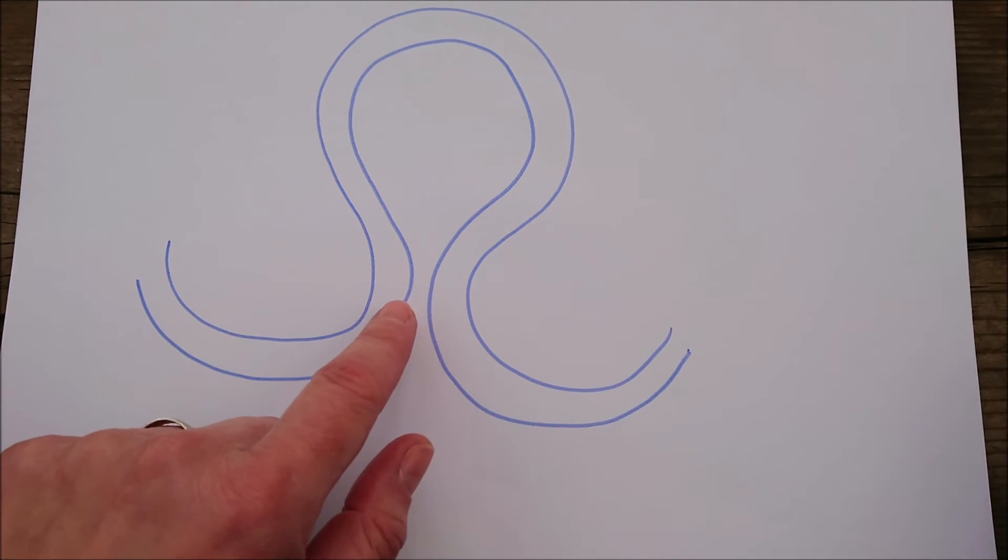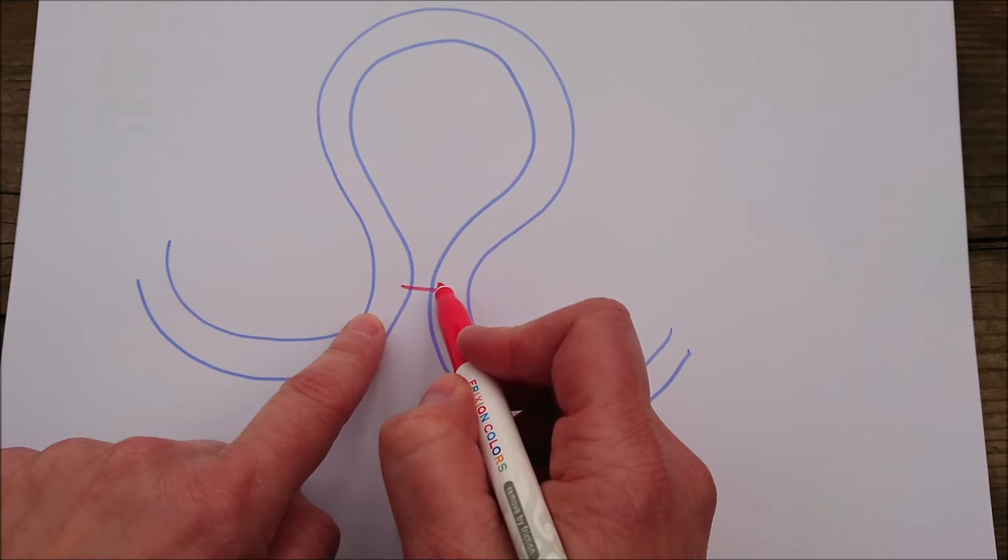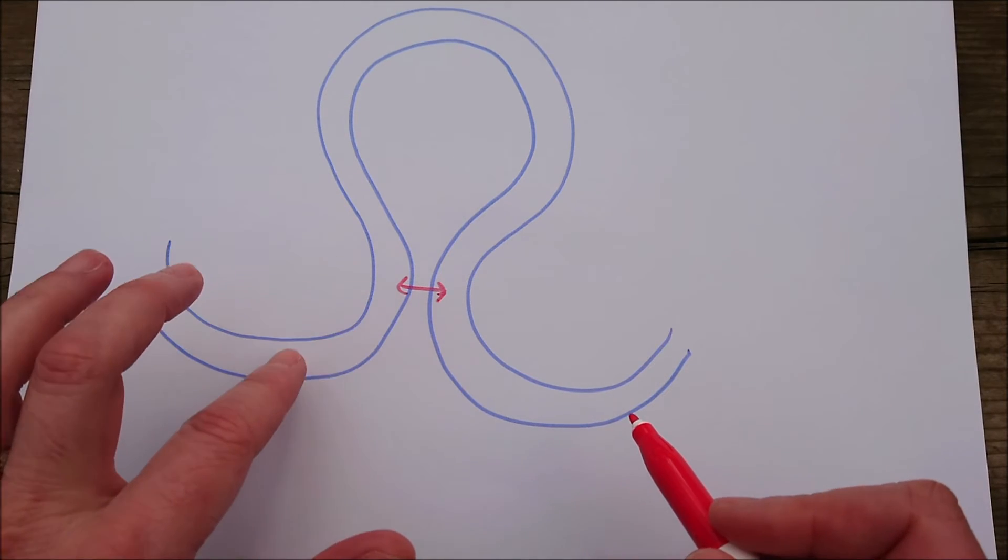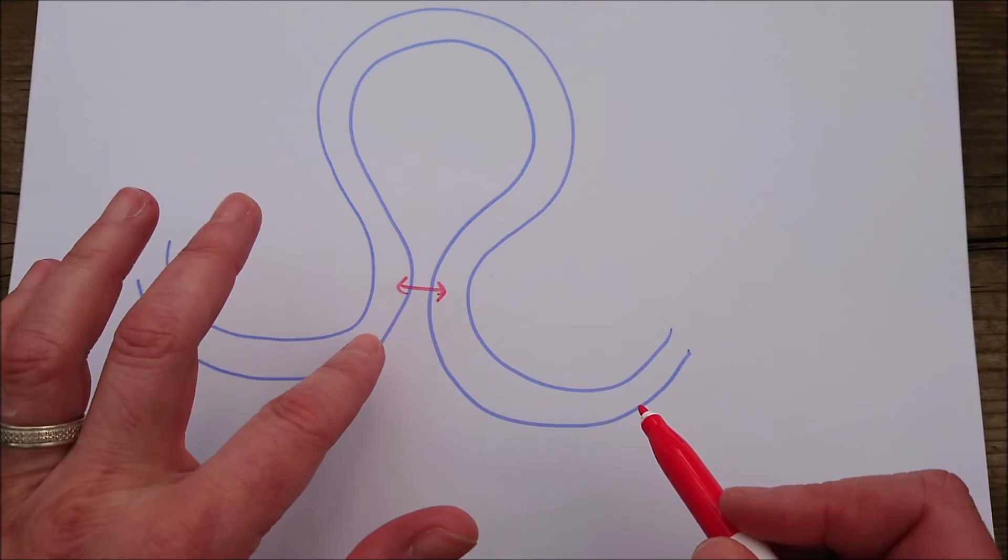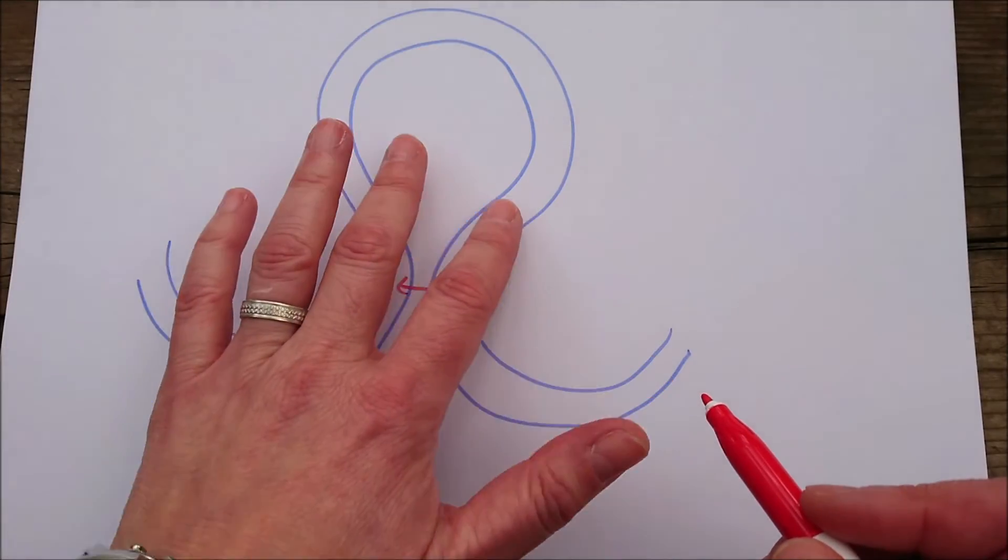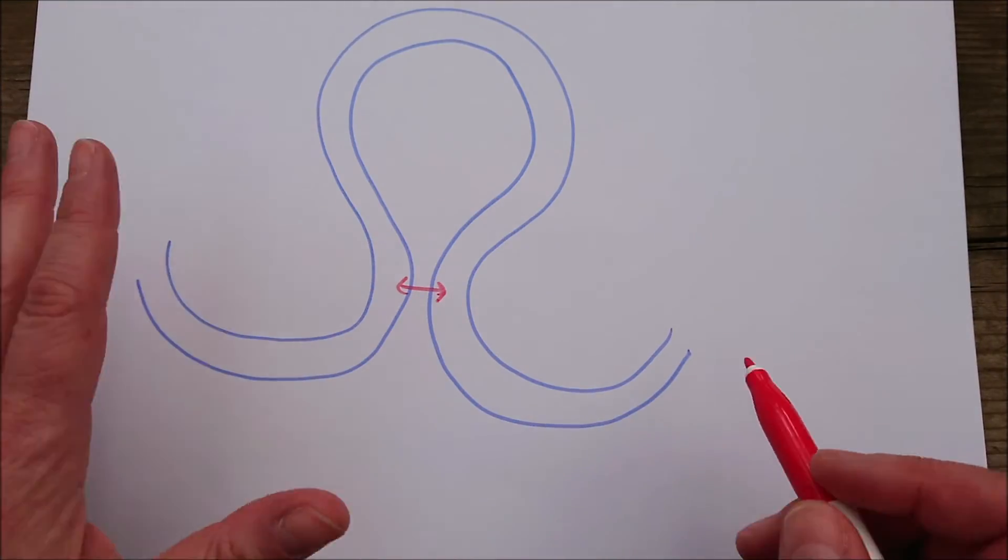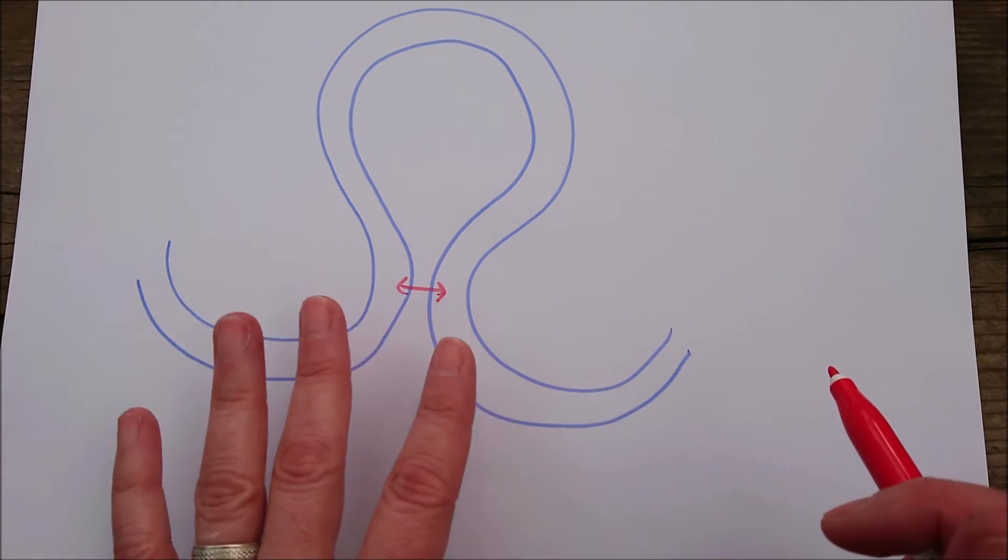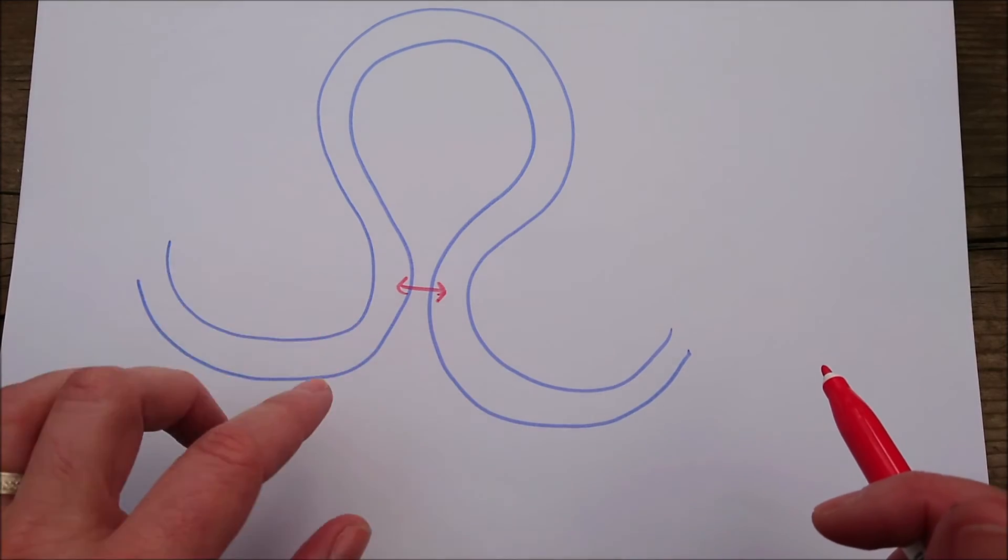Now the neck of the meander is so close that it isn't going to take very long for those two bits to join together. And when they do, the river is going to flow straight across there. It isn't going to bother going all the way around the meander bend, because things in nature tend to take the fastest course. Humans do that too—we'll take the easiest route possible while still achieving whatever it is we need to do.